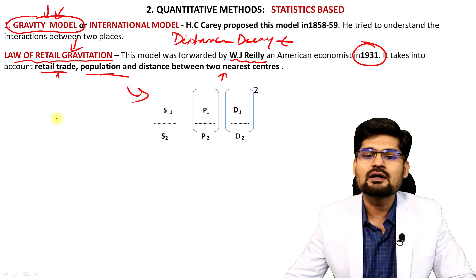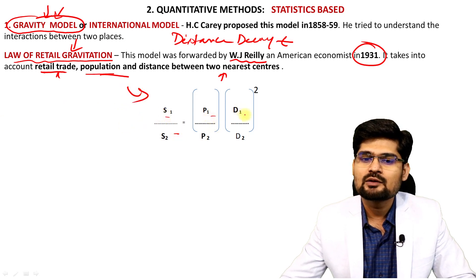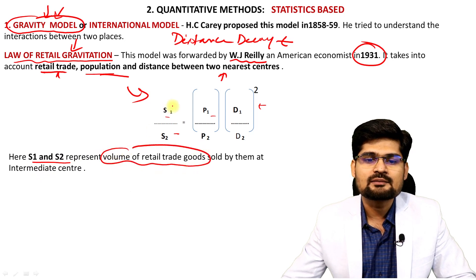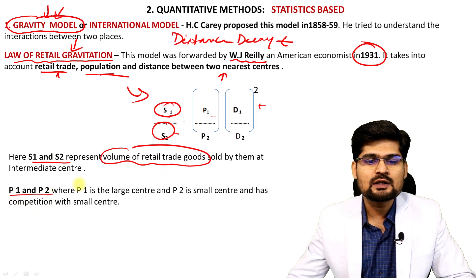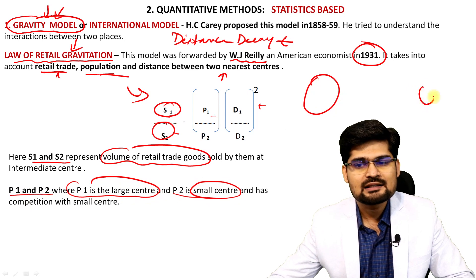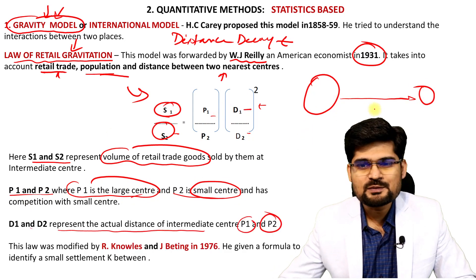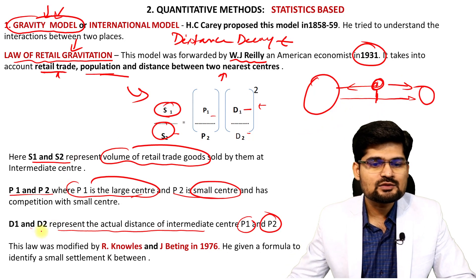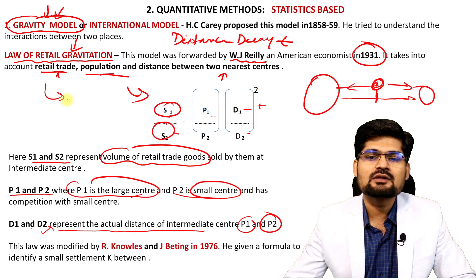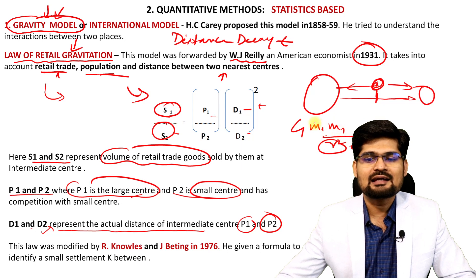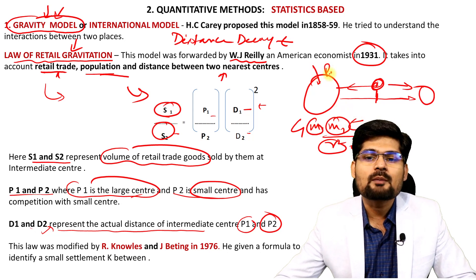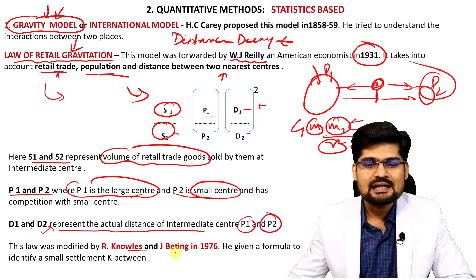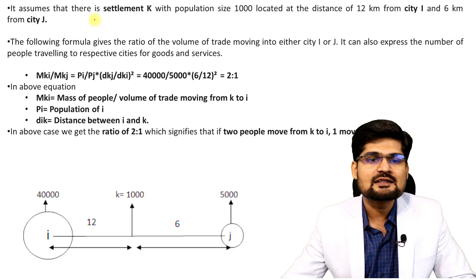Raleigh's formula is: S1/S2 = (P1/P2) × (D1/D2)², where S1 and S2 are the volumes of retail trade, P1 is the largest center, P2 is the smaller center, and D is the distance. This derives from the gravity model formula G = M1×M2/R², where R is distance and M1, M2 are the masses — here, the populations of two settlements. Nulls and Betting (1976) advanced this model. For example, with settlement K (population 1,000) located 12 km from city I (population 40,000) and 6 km from city J (population 5,000), the ratio yields 2:1, meaning two people move from K to I and one person moves from K to J.